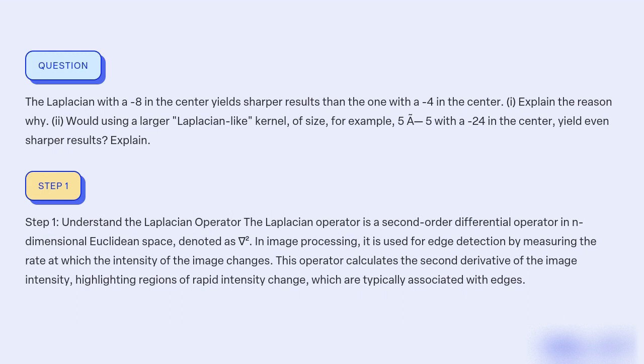This operator calculates the second derivative of the image intensity, highlighting regions of rapid intensity change, which are typically associated with edges.